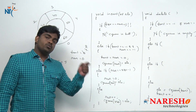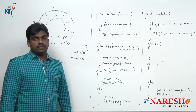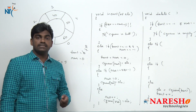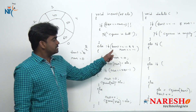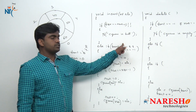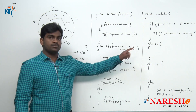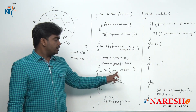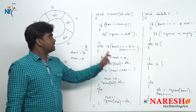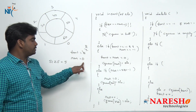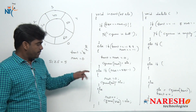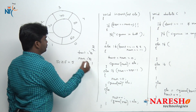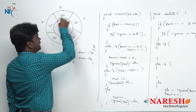Next, inserting one more element. Front equals minus 1 and rear equals minus 1 — condition fails. Rear equals size minus 1 — condition fails because rear value is 0. So in the last else block, rear plus plus makes rear value 1, and we insert 70. The queue is full again.